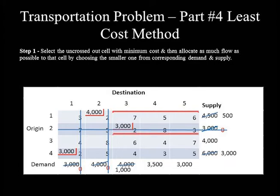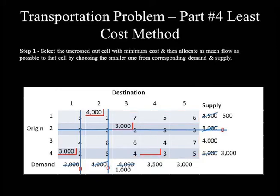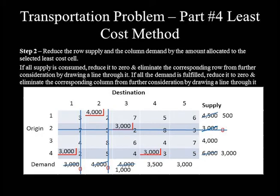From the remaining unlined cells, the one with the least cost is Origin 4 to Destination 4 with a unit cost of 3. Demand is 3,500 and supply is 3,000, so 3,000 is allocated to this cell. Demand reduces from 3,500 to 500, and supply reduces from 3,000 to 0. Since Origin 4 supply is reduced to 0, row 4 is deleted by drawing a line through it.